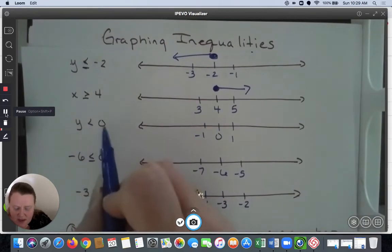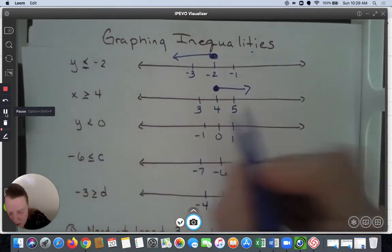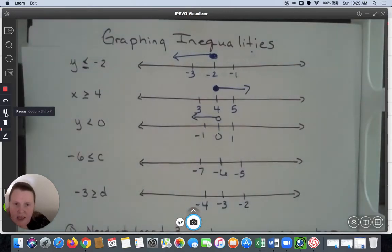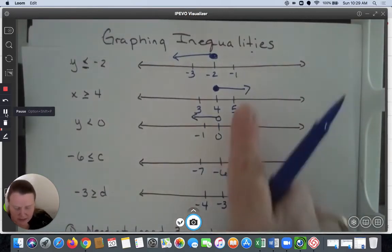Now we have y < 0, so we're going to have an open circle and we want the numbers on the smaller than side. Notice my symbols match.